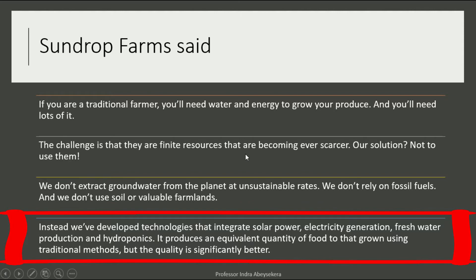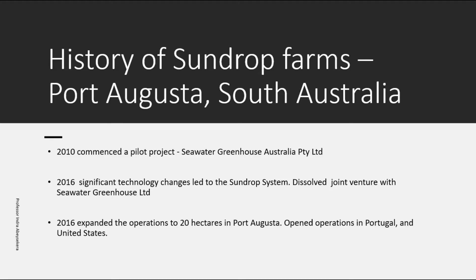Instead, they have developed technologies that integrate solar power, electricity generation, fresh water production, and hydroponics. It produces an equivalent quantity of food to that grown using traditional methods, but the quality is significantly better.